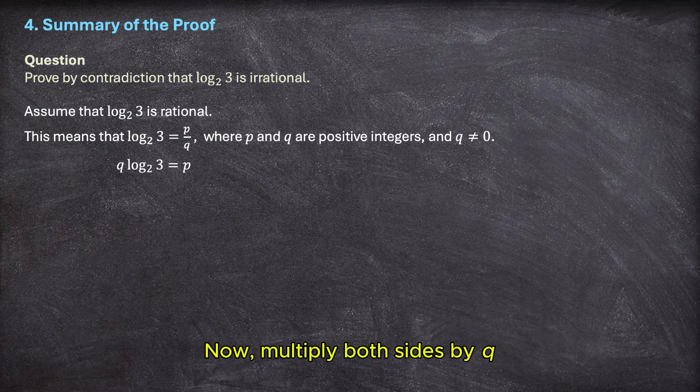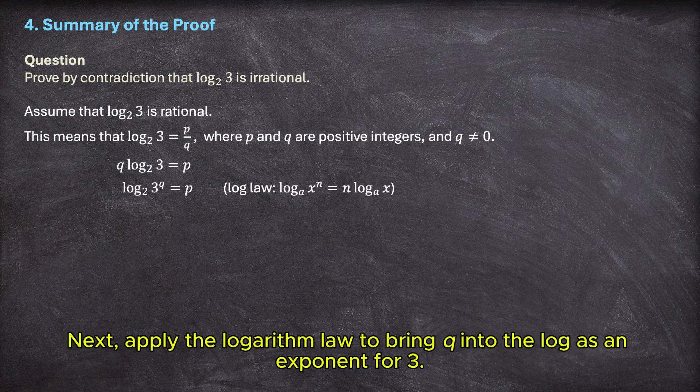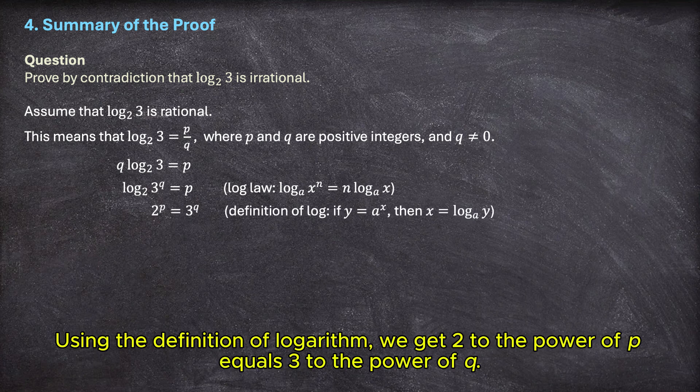Now, multiply both sides by q. Next, apply the logarithm law to bring q into the log as an exponent for 3. Using the definition of logarithm, we get 2 to the power of p equals 3 to the power of q.